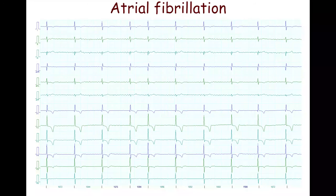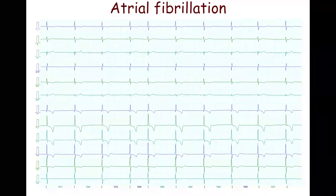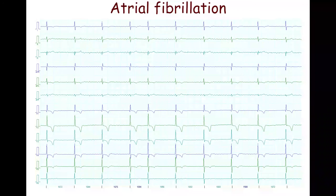Atrial fibrillation with slow ventricular response may be seen in patients with dysfunction of the atrioventricular node, overdose of atrioventricular nodal blocking agents, or increased vagal tone. On this ECG, the ventricular rate is 37 beats per minute. Also, there are signs of right ventricular dilation.